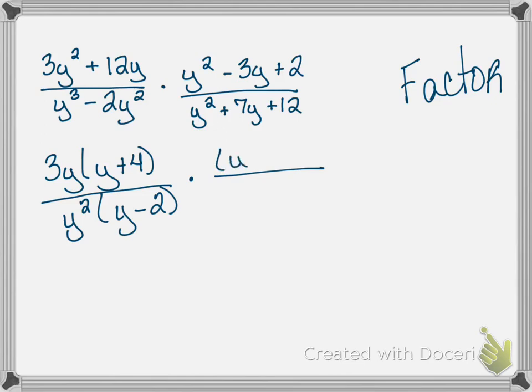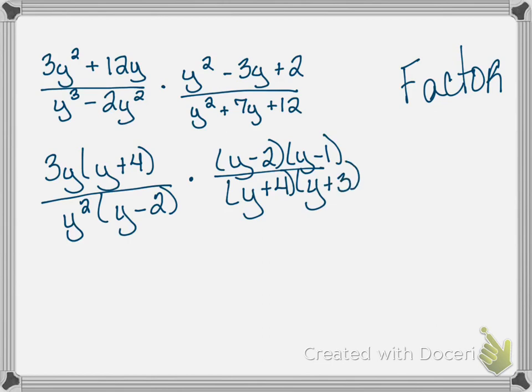For the trinomial y squared minus 3y plus 2: the product is 2, the sum is negative 3, giving us y minus 2 and y minus 1 — both negative because a negative times a negative gives a positive and negative 2 plus negative 1 is negative 3. For the other denominator with sum 7 and product 12, we get y plus 4 and y plus 3.